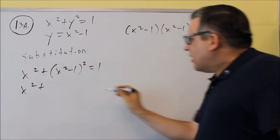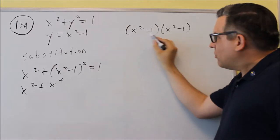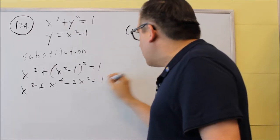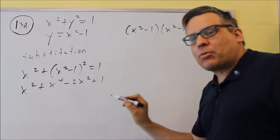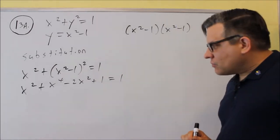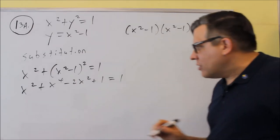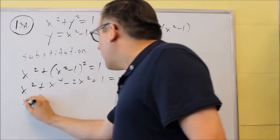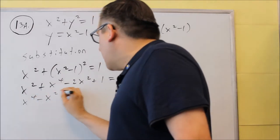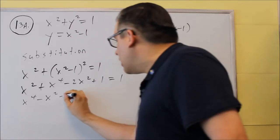So x squared times x squared is x to the fourth. I have a minus x squared and a minus x squared — they don't cancel, they add up to negative 2x squared. And negative 1 times negative 1 gives you plus 1. We still have equals 1 on the other side. Now we solve for x: we can cancel out the ones and combine like terms. I have x to the fourth, and 1x squared minus 2x squared gives me minus 1x squared, and the constants cancel, giving us zero.